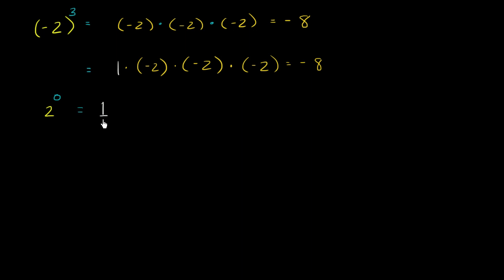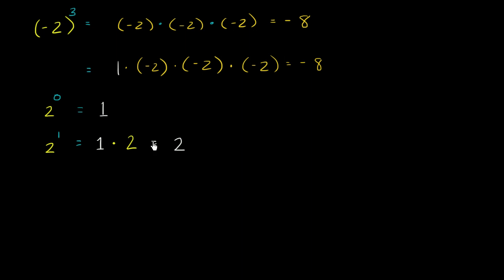And actually, any non-zero number to the 0 power is 1 by that same rationale. That might seem counterintuitive, but it makes sense with this definition. And it will also make sense when we think about 2 to the 1st power. We start with a 1 and multiply it by 2 one time — so 1 times 2 — which is clearly just going to be equal to 2. Any number to the 1st power is just going to equal that number.